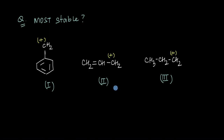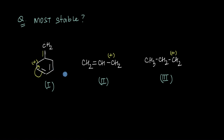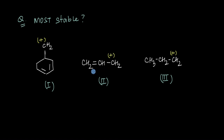Now that you understand how stability works, which amongst these three do you think will be the most stable? It's going to be this one — we can draw lots of resonating structures for this molecule. This pi bond can shift over here giving one resonating structure, and then this pi bond can move further, and so on. However, for this particular molecule we can only have one other resonating structure in which this pi bond shifts over. So because the delocalization is lower here compared to the first, and there has to be a pi bond present, this molecule with more resonating structures is going to be more stable.